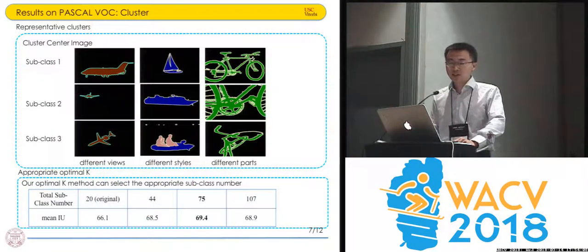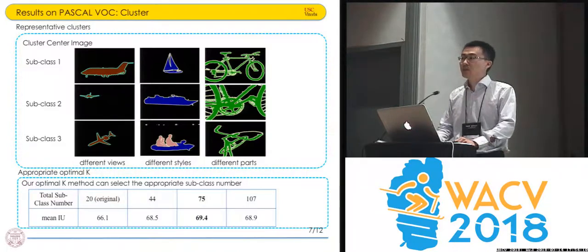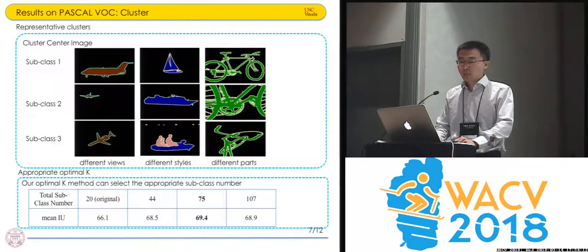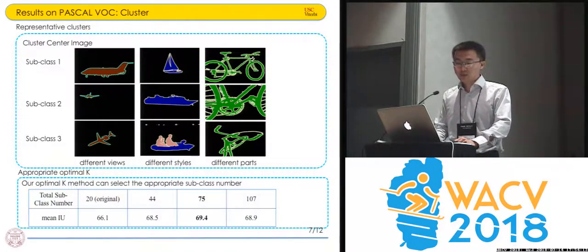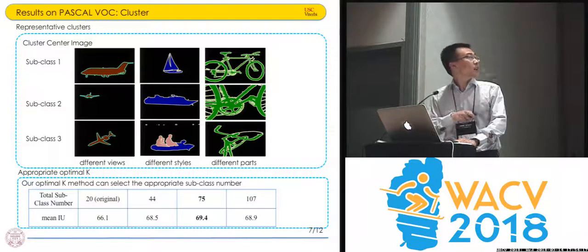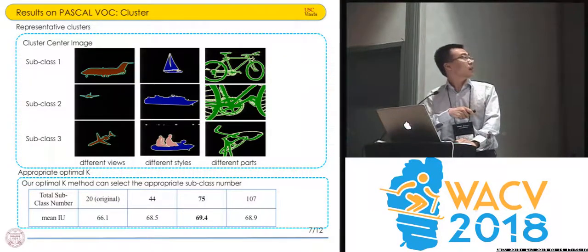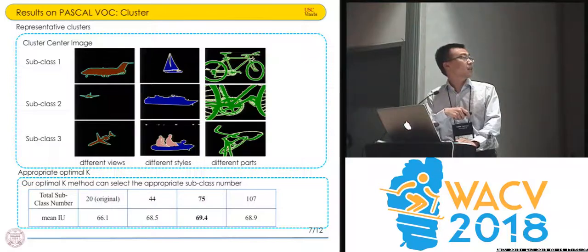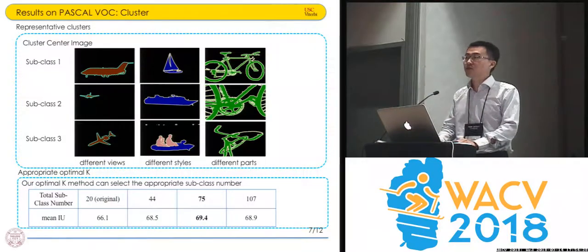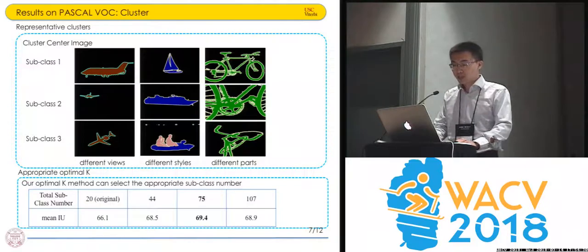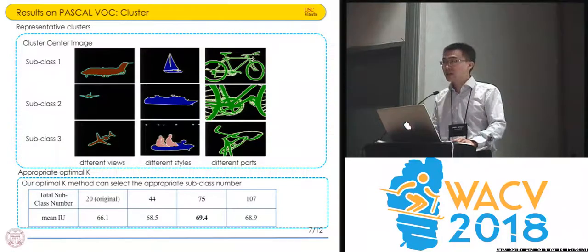We can get much better results compared with the baseline. To verify whether our clustering is efficient, we show the cluster center image for each subclass. For example, the airplane class has different cluster center images: one from very far away, one is the side view, and another kind of view. There are also different styles for the boat and different parts for the bags.